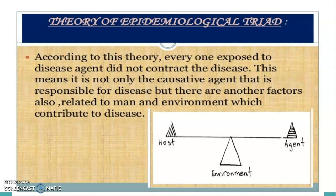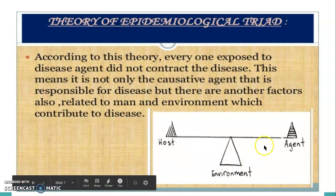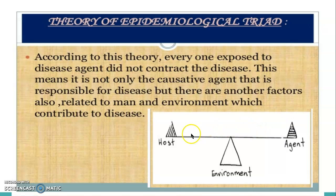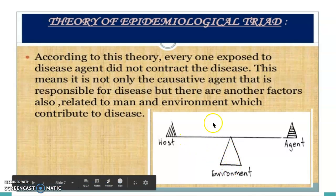The next one is the epidemiological triad. After that, the theory was redefined and another theory was produced called the epidemiological triad. Triad means there are three things which connect. Here we are connected with the triangle of environment, agent, and host. It is not only the agent — even though the agent is present, the host will not get an infection if the environment is a healthy environment. So these three things are linked together.